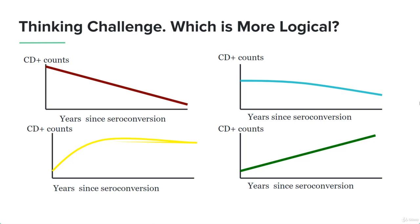It is quite logical considering that we're going to model different relationships and some relationships between different variables are quite simple and easy to understand. For example, consider the price of houses increasing with their size. It's pretty common sense — if we buy a bigger house, it's going to be more expensive. That's why the fourth point tells us that it is common sense to understand regression models.